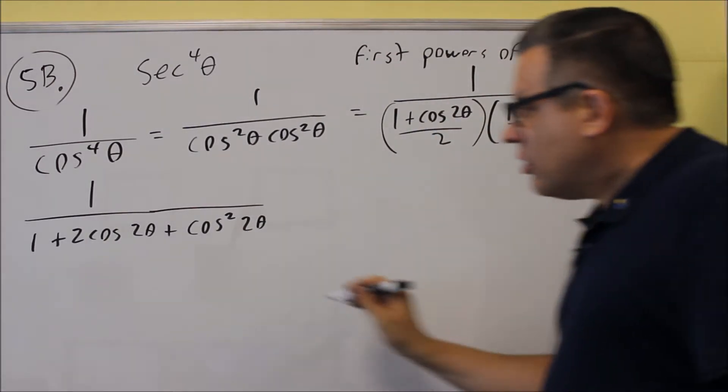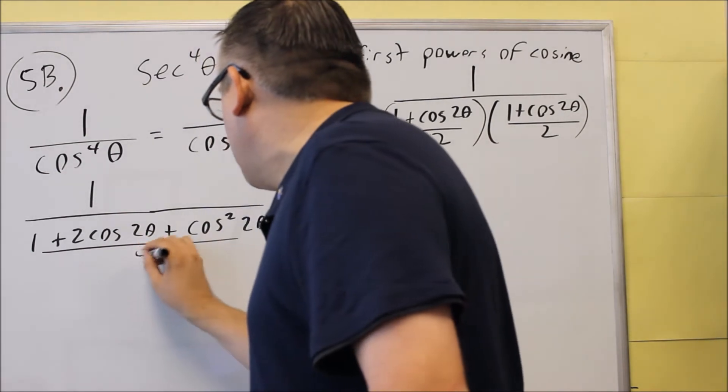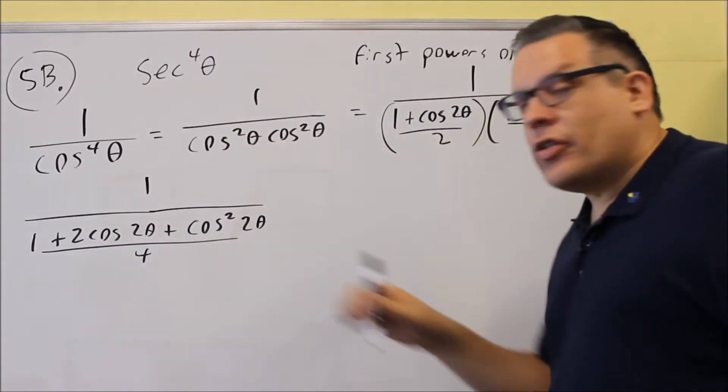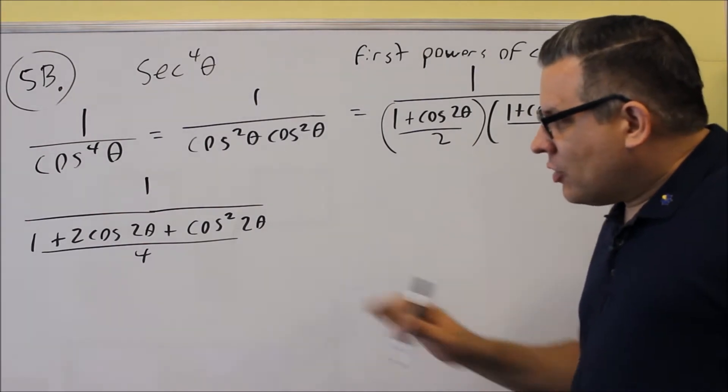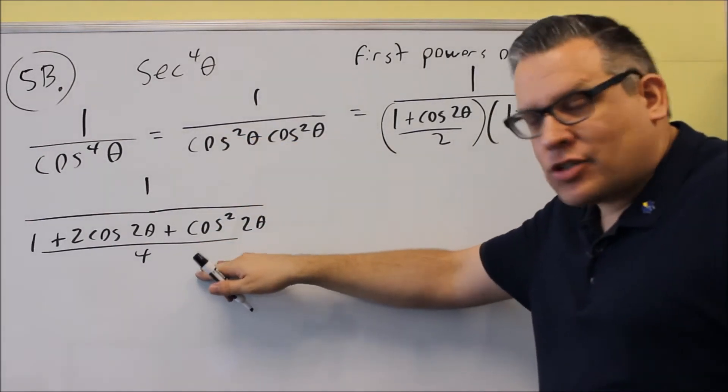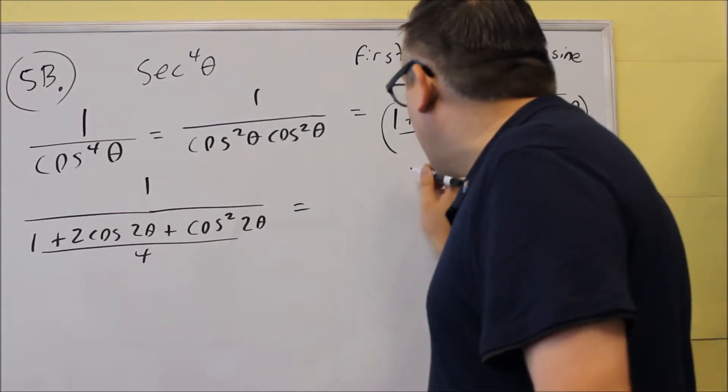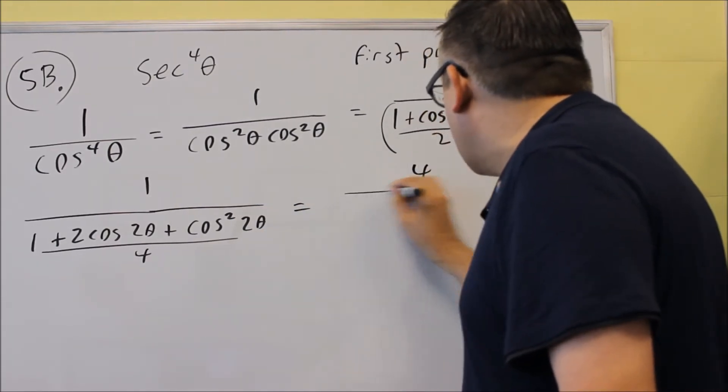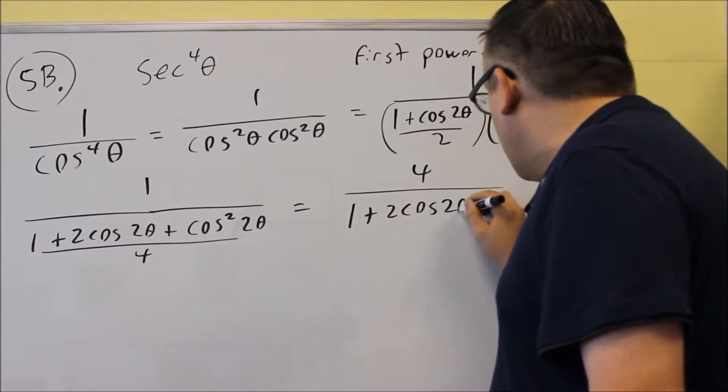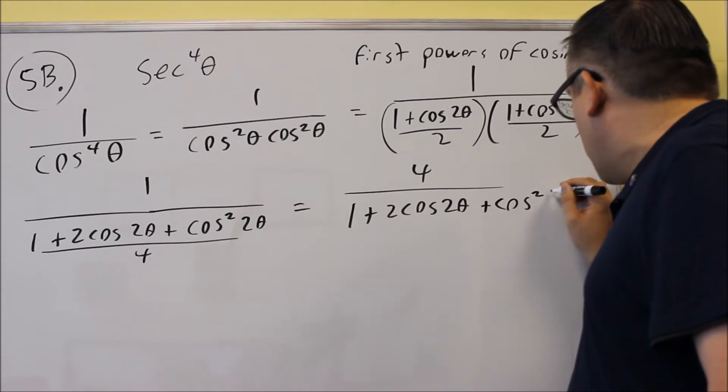So that's what you get by multiplying all the way across the top here. Now, across the bottom down there, you'll get a 4. So we really have 1 over all this here. We can flip this, because 1 divided by a fraction, same as multiplying by the reciprocal. So when we flip that, we're just going to get a 4 on top, and on the bottom, you have 1 plus 2 cosine 2 theta plus cosine squared 2 theta.